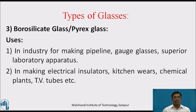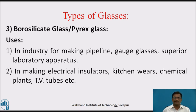Uses of borosilicate glass: it is used in industry for making pipelines, gauge glasses, and superior laboratory apparatus. It is also used in making electrical insulators, kitchenwares, chemical plants, television tubes, etc.